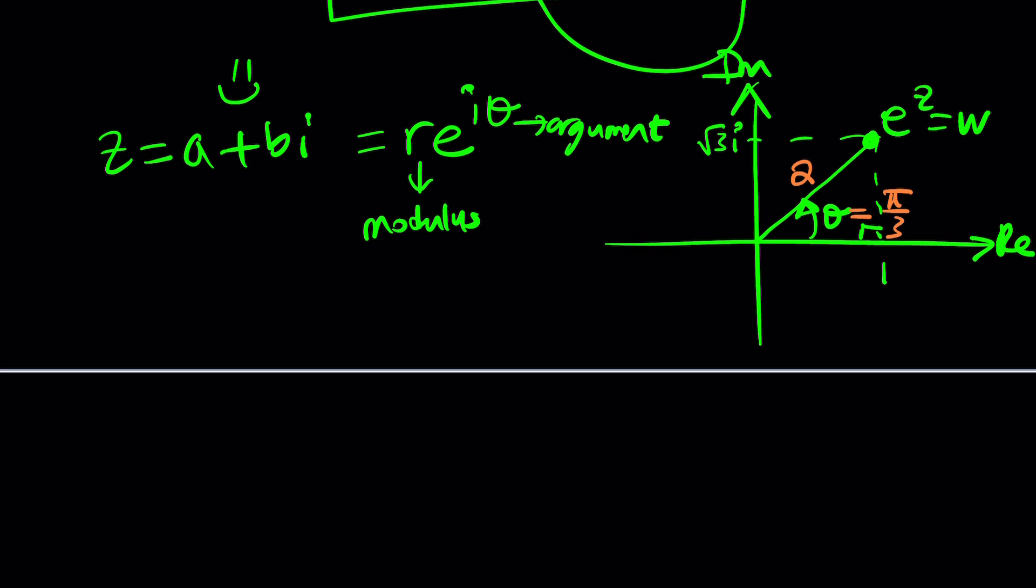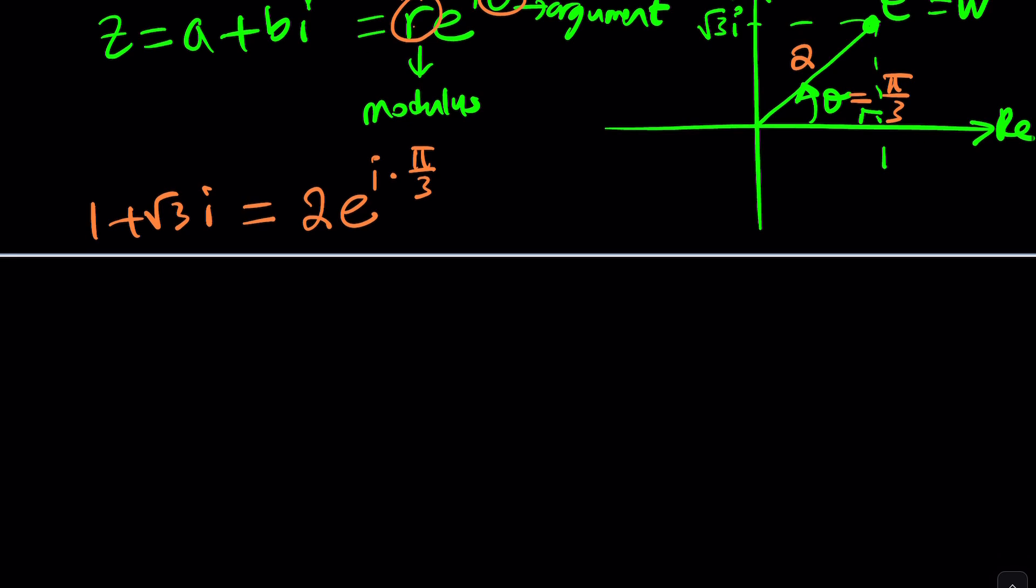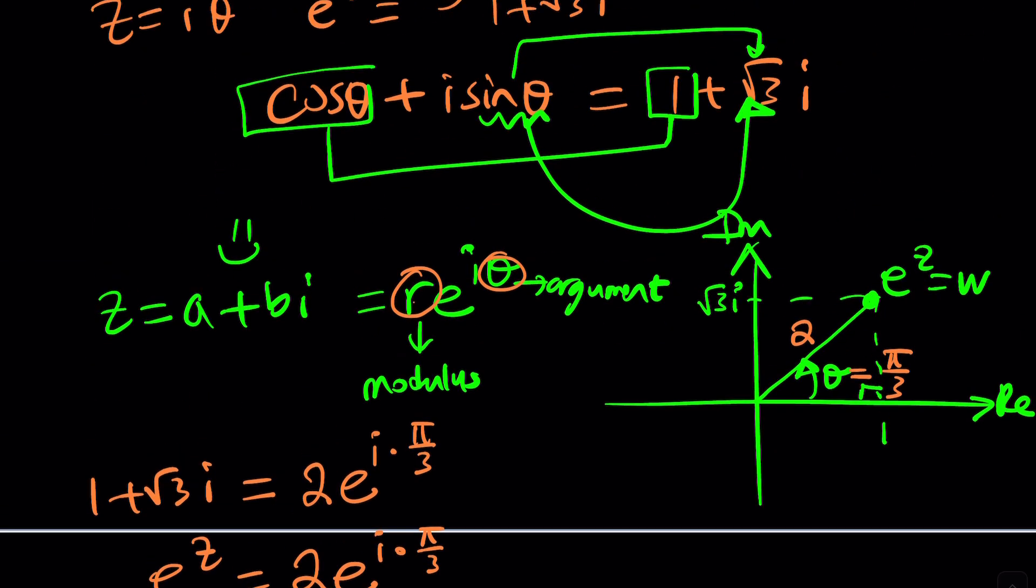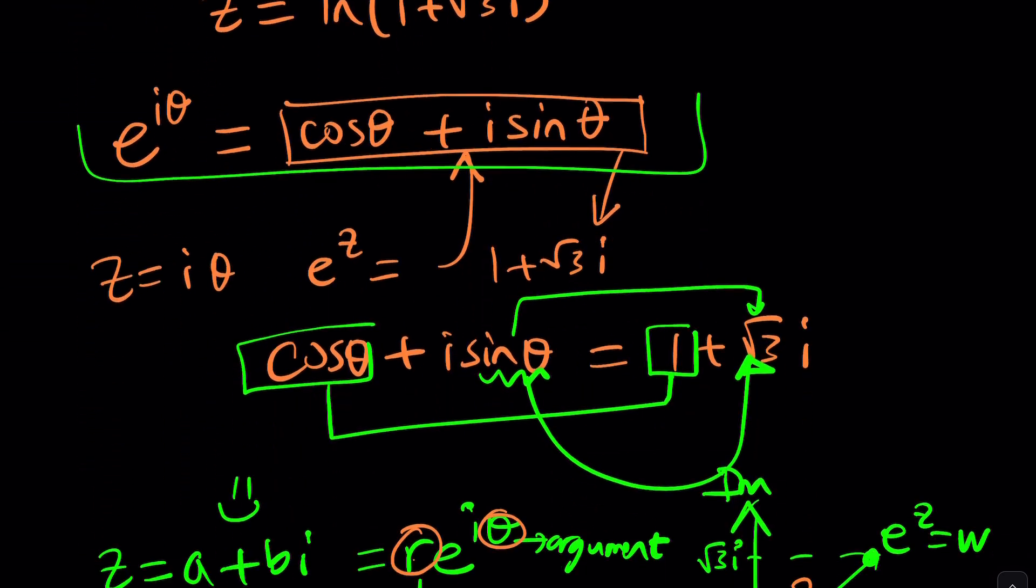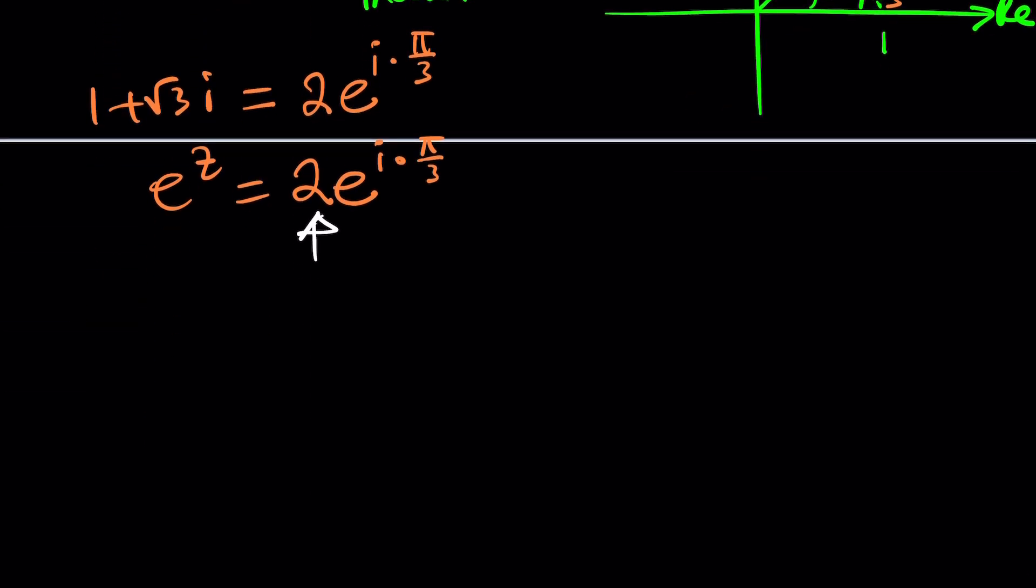Now, why is that important? Because you're going to plug these in here. In other words, 1 plus root 3i can be written as 2 times e to the power i times pi over 3. How does this help? Well, maybe you can set it equal to what we're given. We were given e to the power z equals this. So now we can write this as e to the power z equals 2 times e to the power i pi over 3. Now, the presence of 2 also tells you why our first approach did not work. When we try to set these two things equal to each other, it didn't work because the r was assumed to be 1, which is not 1. In this case, the modulus is 1, but not on the other side of things.